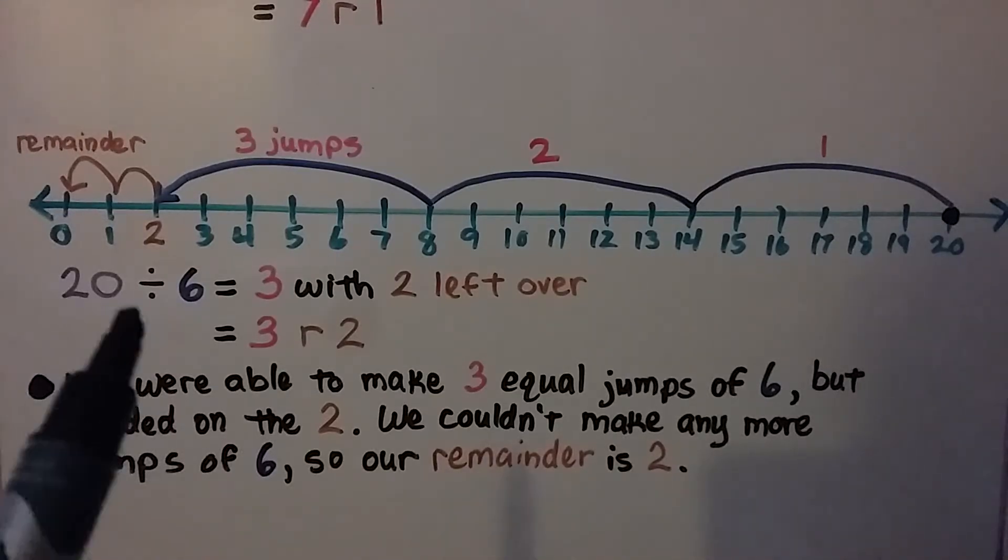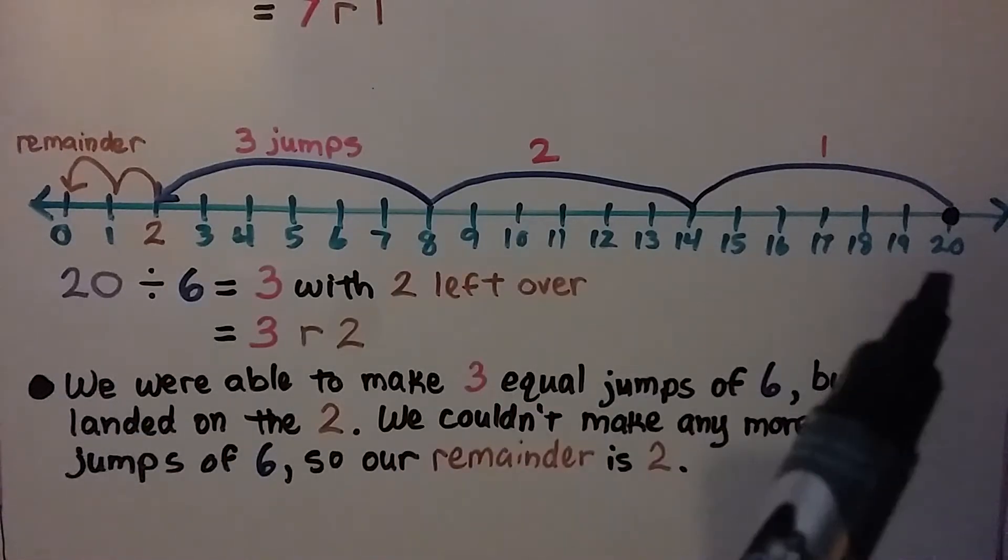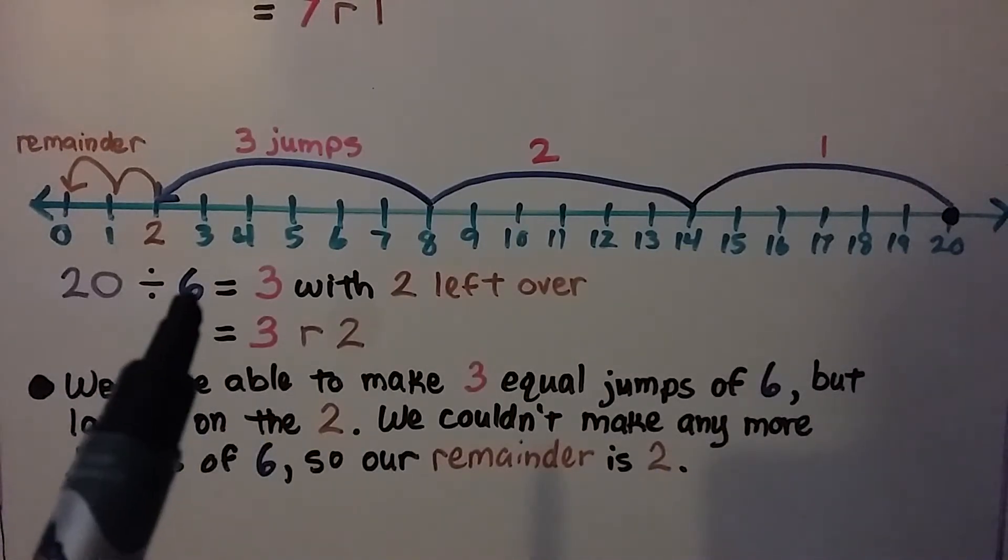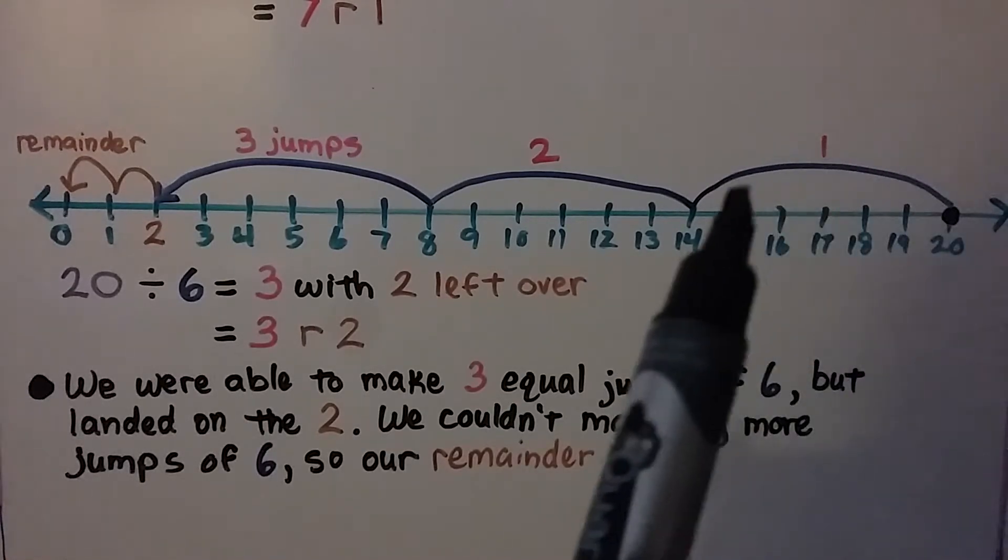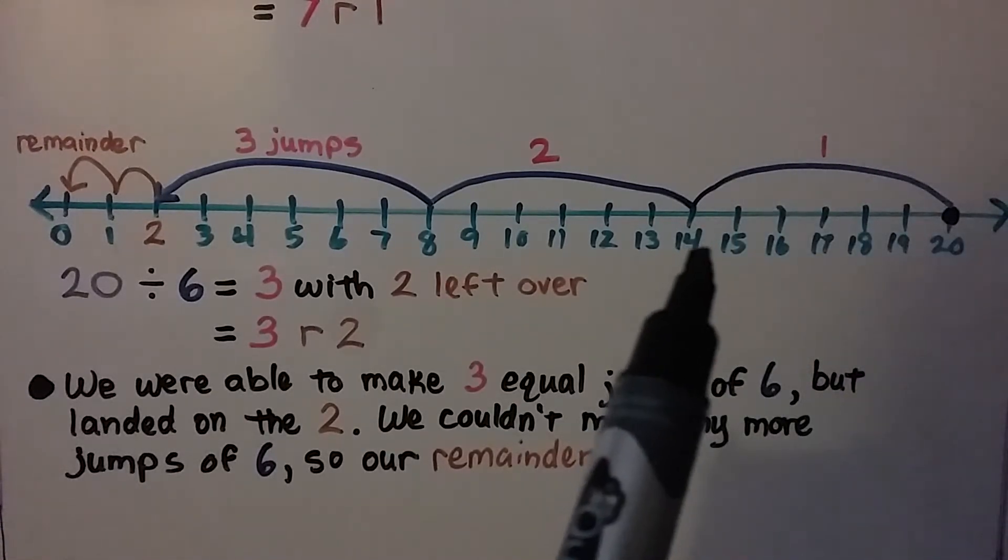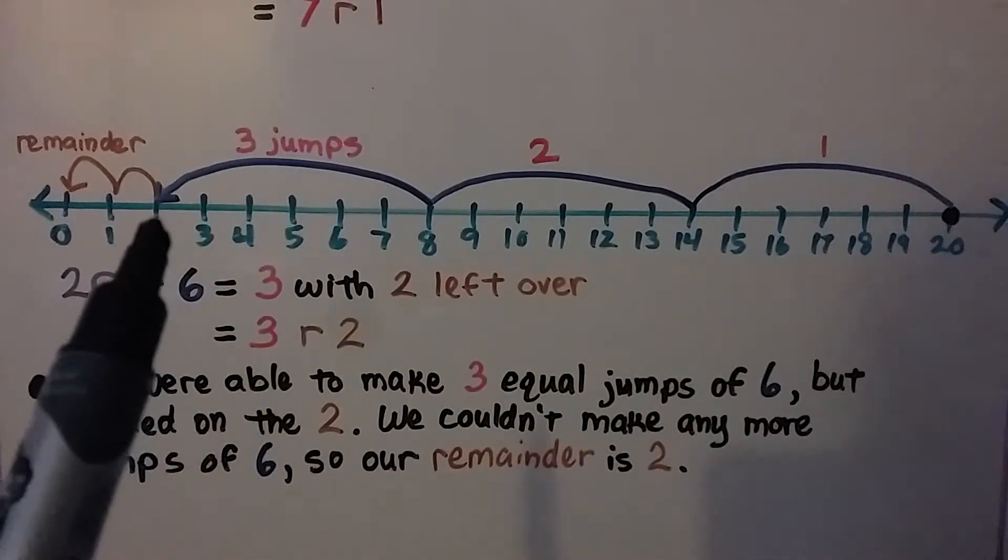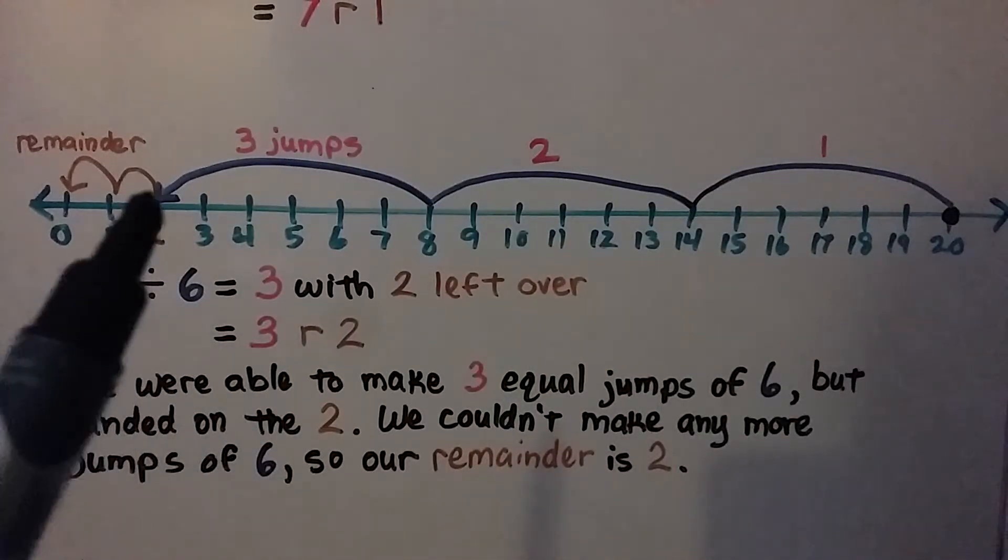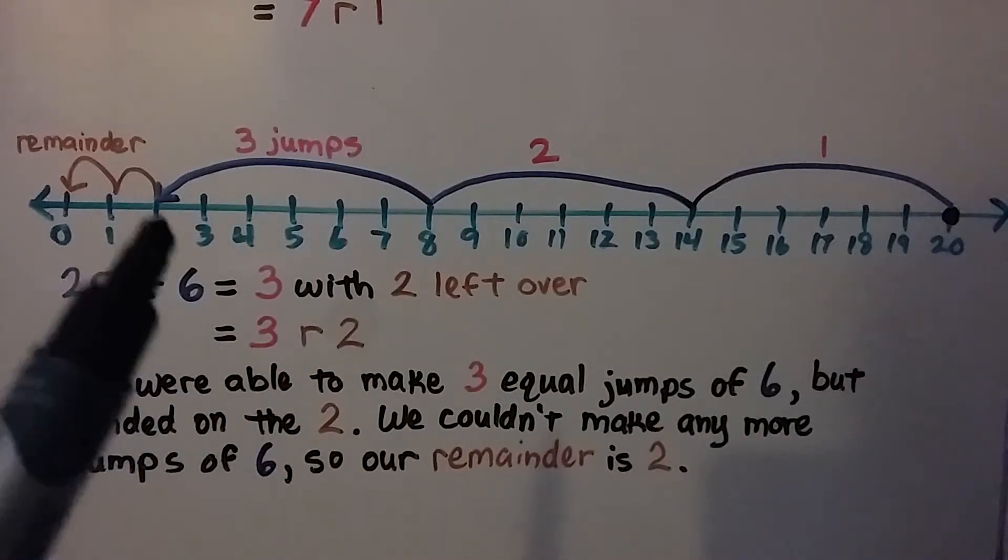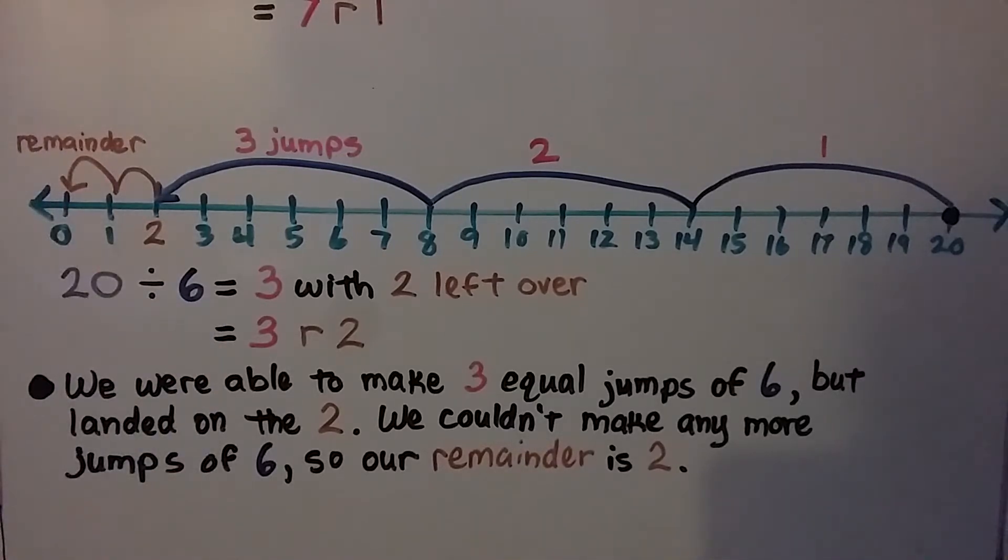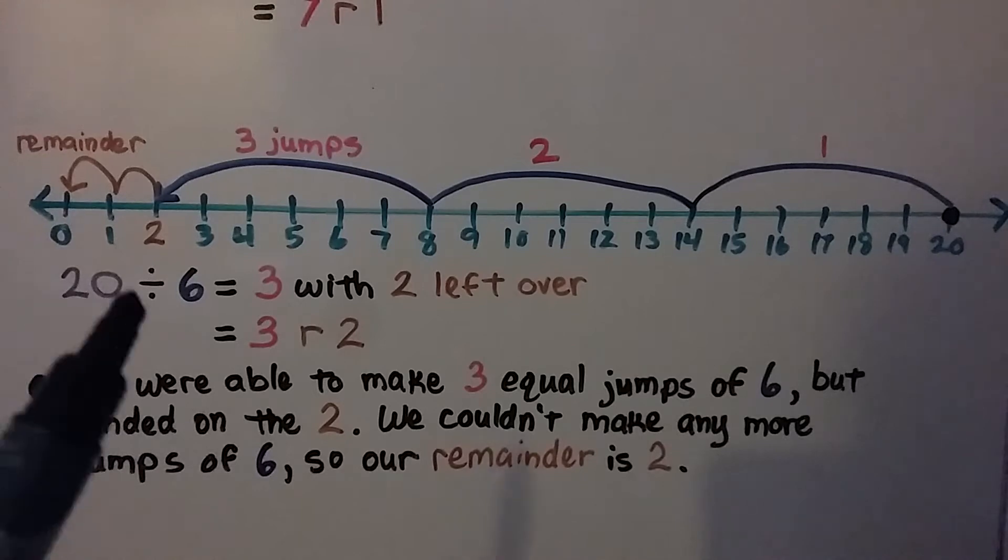Here we have 20 divided by 6. We're going to start at the 20 and our jump size are going to be 6. We're going to jump 6 to 14, then we're going to jump another 6 back to 8. Another 6, now we're at 2. We made 3 jumps, but we can't jump 6 anymore. There's only 2 here. So the quotient is a 3 with 2 left over. We have 3 remainder 2. We were able to make 3 equal jumps of 6 but landed on the 2. And we couldn't make any more jumps of 6, so our remainder is 2.